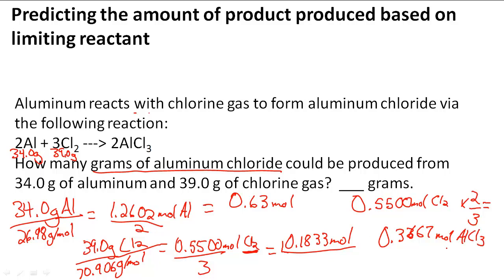Now that we have those moles, all we have to do is multiply by the molar mass of AlCl3 to get the grams. 0.3667 moles of AlCl3 times the molar mass of AlCl3, which is 133.341 grams per mole, equals 48.9 grams of AlCl3 that's going to be produced.